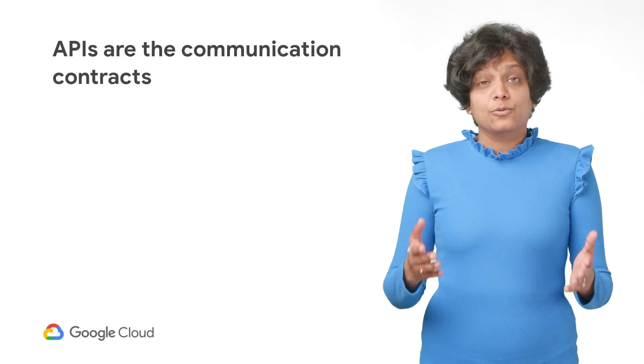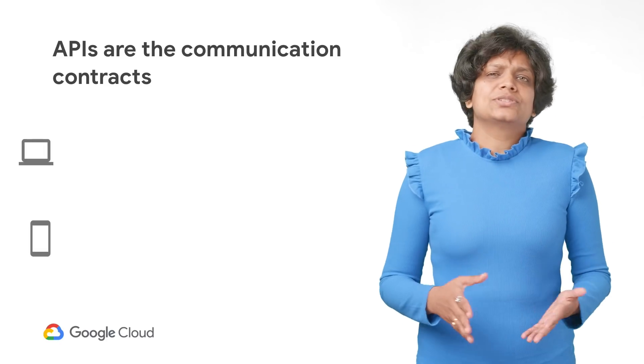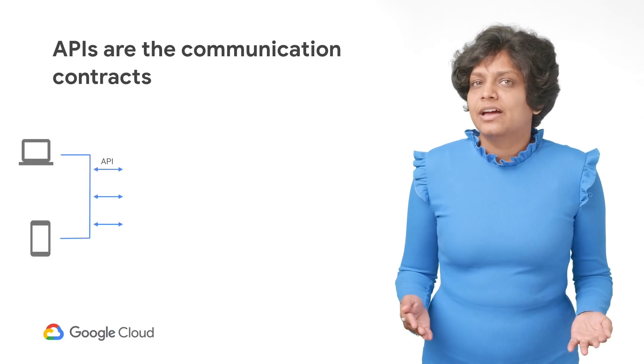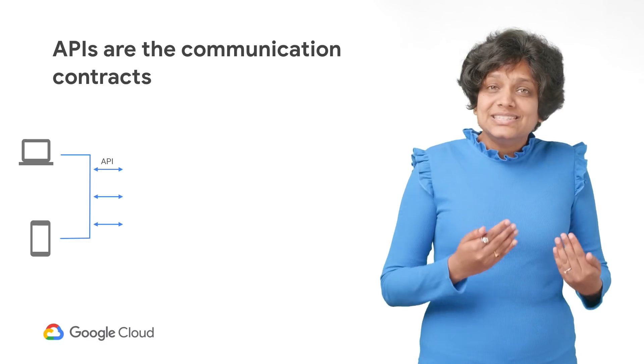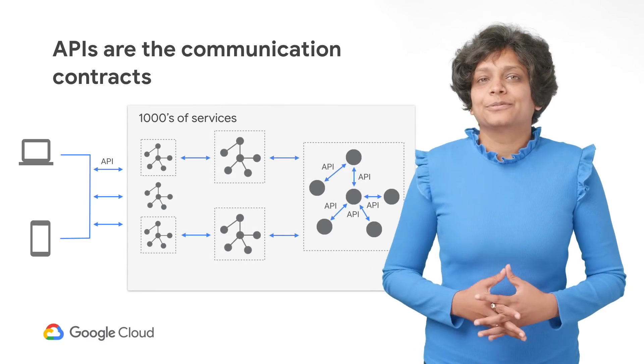Now, what is an API? Well, APIs are just communication contracts. Every system that can receive requests has an API.